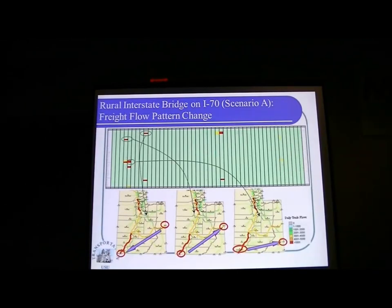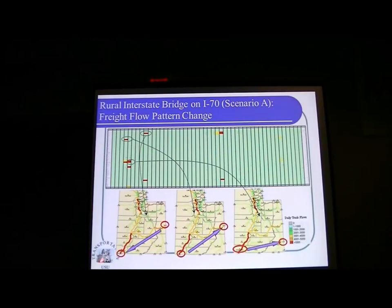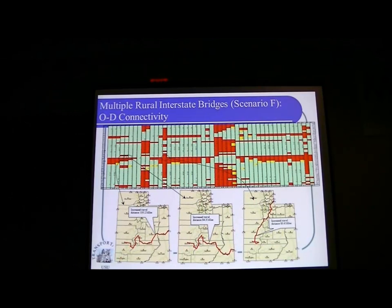Another problem is the truck trip road changes. You can see that there are truck trips between certain county pairs — for instance, this one is Colorado and this one is Nevada. A lot of truck trips are moving from those directions. The red areas spread more when we have multiple bridge disruptions, and you can see that a lot of red here represents the severity when the disruption happens. This information is also for the critical path change.